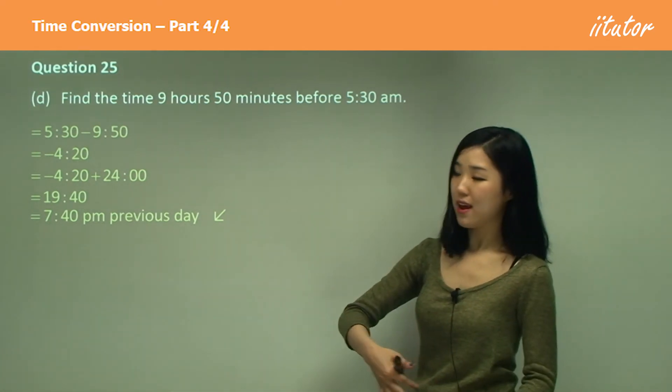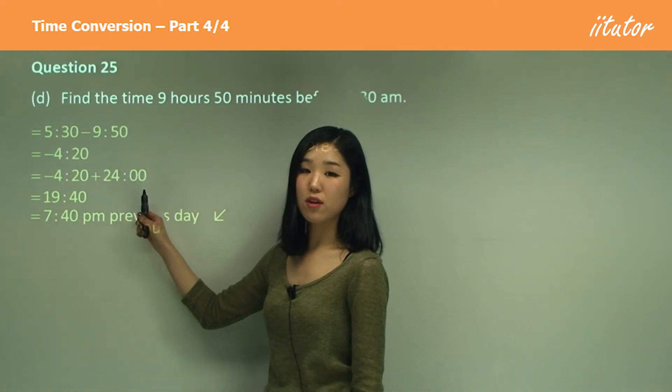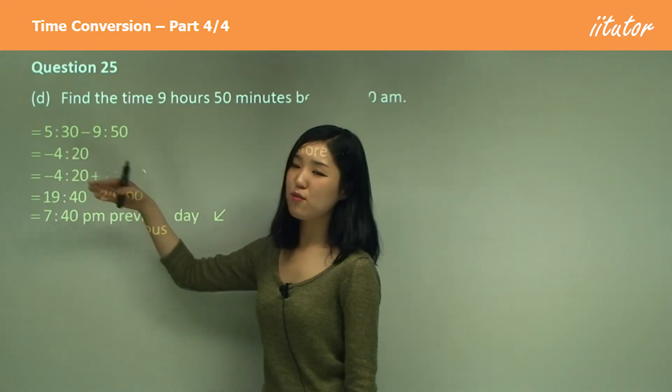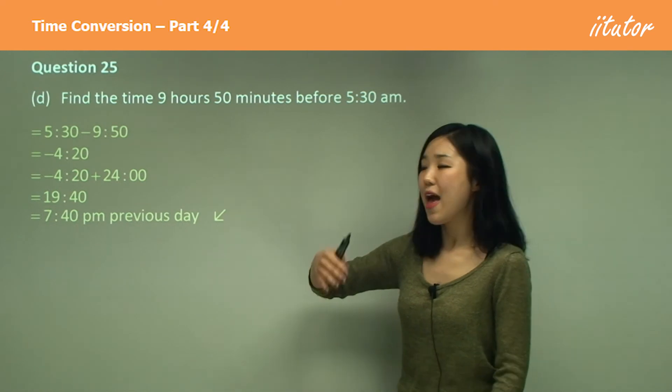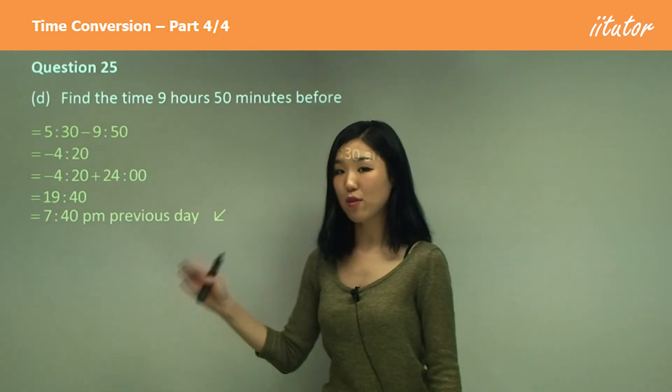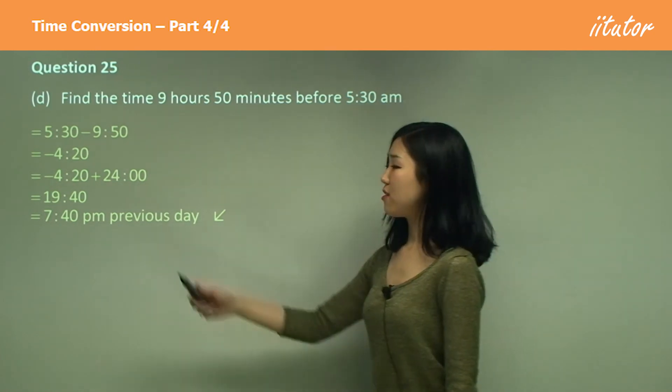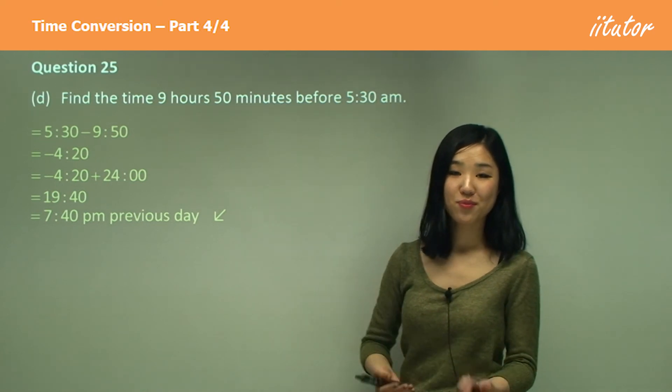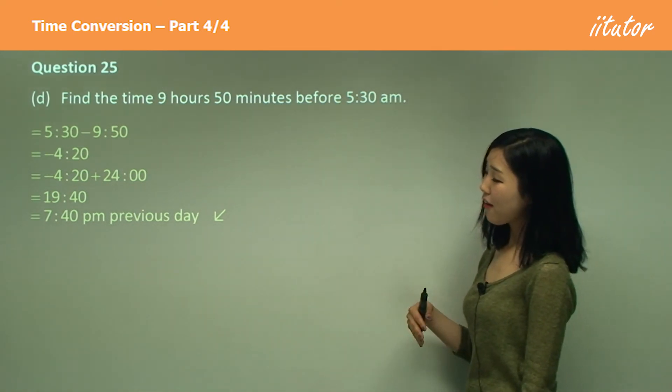The previous day. Because we've added an extra 24 hours from that day. So it's negative. When you get a negative number, it simply means the previous day. And when it exceeds 24, as we had in one of the earlier questions, it means the next day. So because this is negative, we know that it's 7:40 the day before, the previous day. That's how you can identify it.